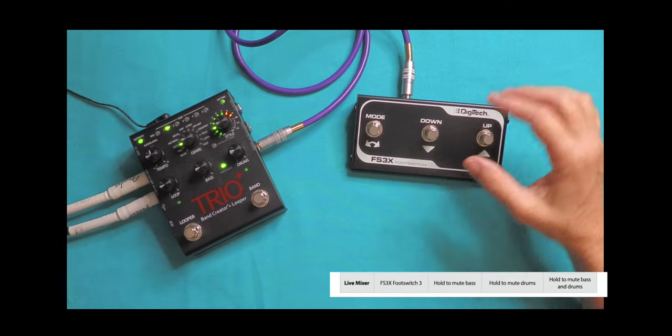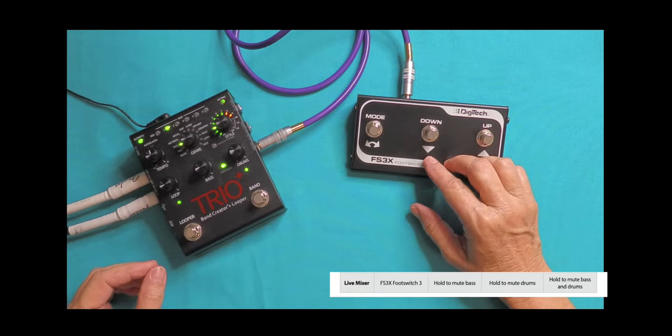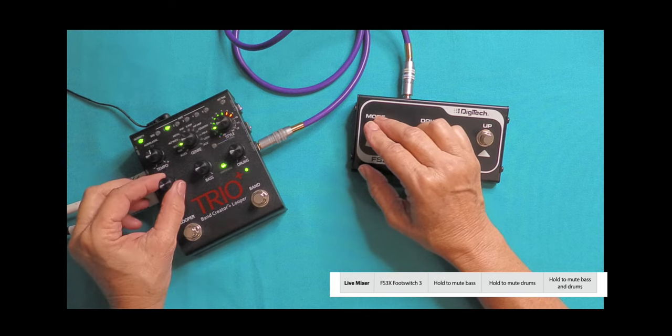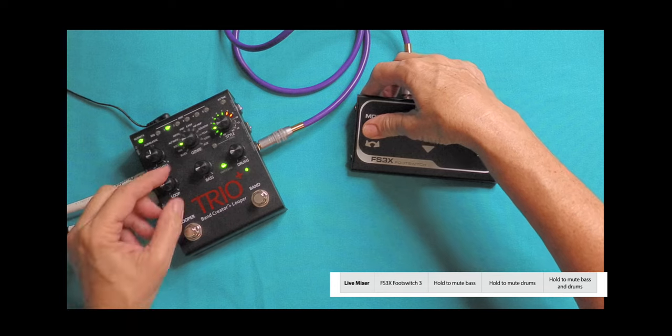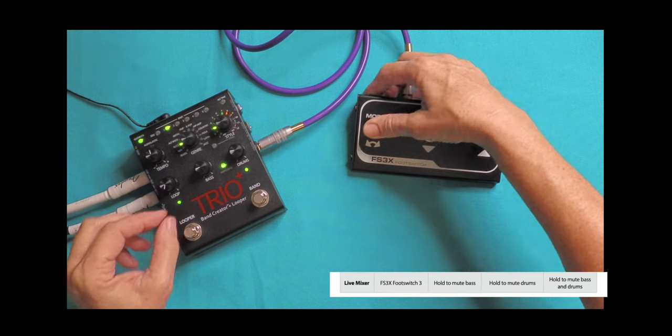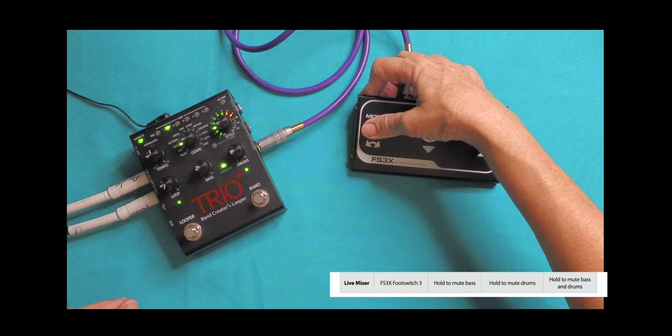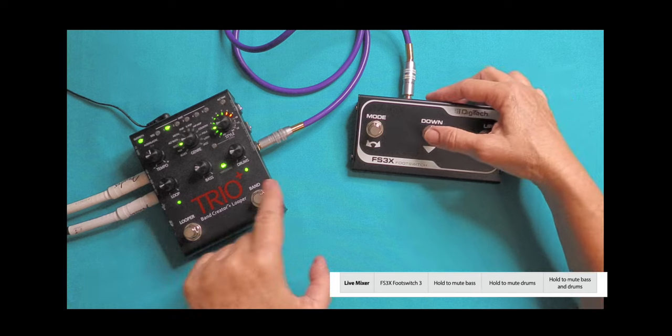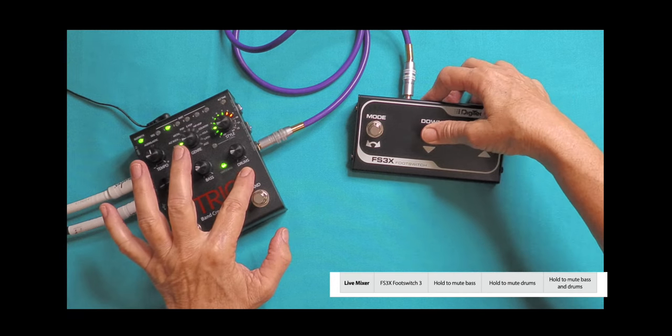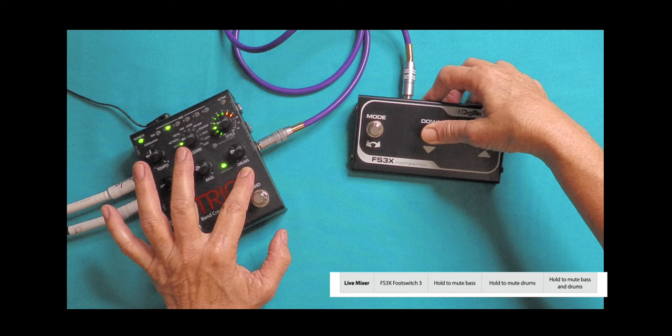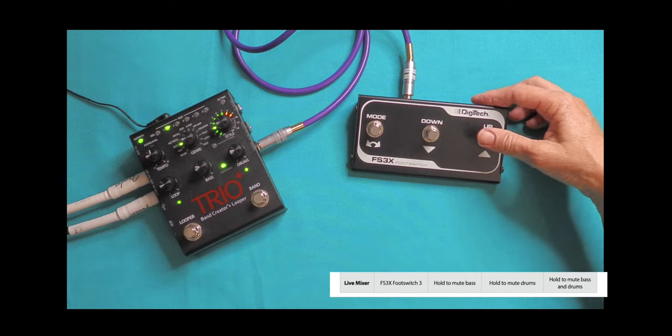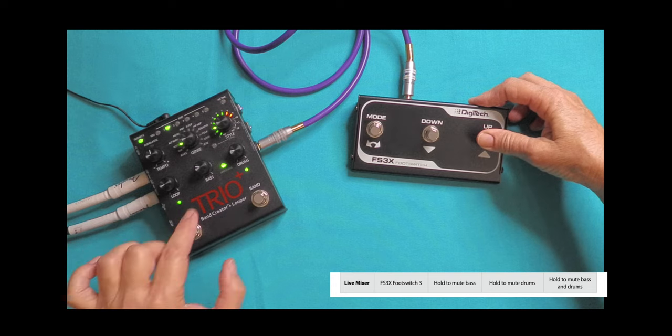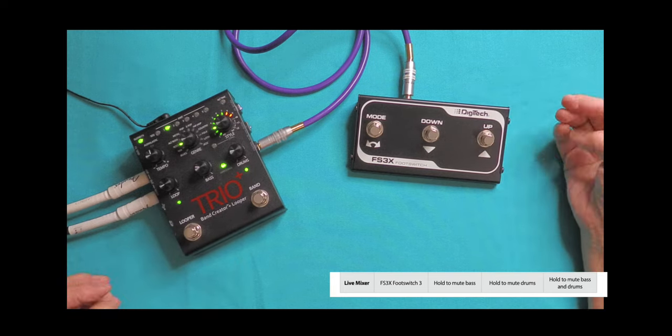We should be able to hold to mute your bass. And this will mute the drums. And this will mute everything except the looper. So your looper will still play, but the other drums and bass will not, and then let it up and it returns.